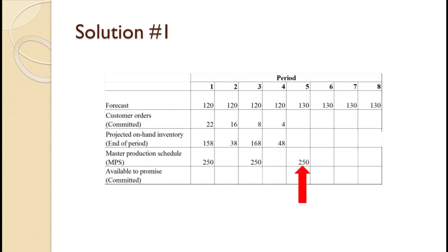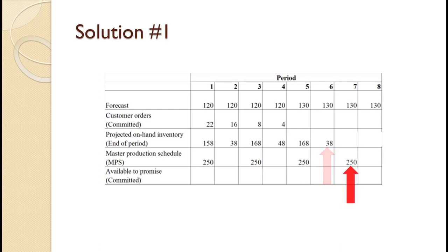For period 5, we have beginning inventory of 48 and need 130, so we schedule production of 250: 48 plus 250 minus 130 equals 168. For period 6, beginning inventory of 168 and only need 130, so no production is needed: 168 minus 130 equals 38. For period 7, beginning inventory of 38 and need 130, so we schedule production of 250: 38 plus 250 minus 130 equals 158. For period 8, beginning inventory of 158 and only need 130, so no production is needed: 158 minus 130 equals 28. That completes calculating the master production schedule.